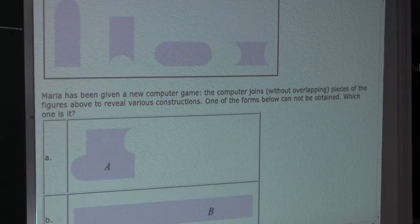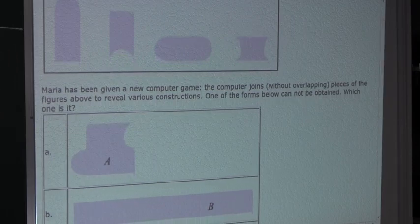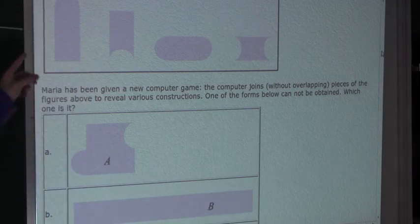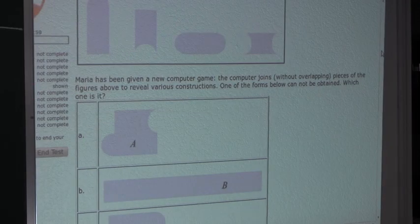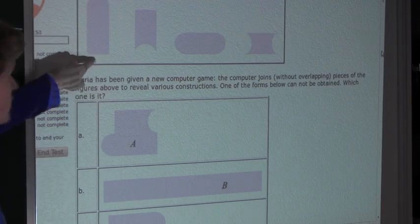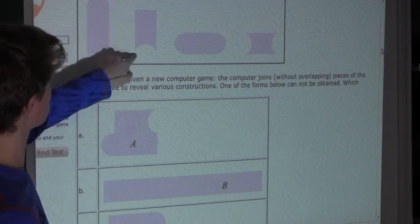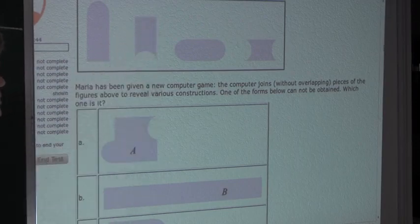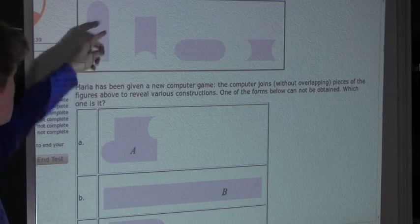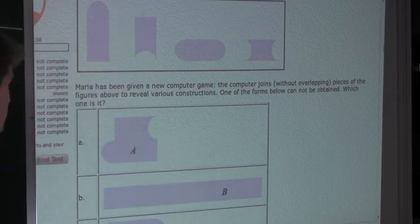Now let's look at option B. Option B is just a long rectangle. We know that the two ends of a rectangle, of course, have straight lines — here and here. Now looking at our four shapes, only two out of these four shapes even have a straight line end. That is this shape right here because of this straight line end, and this shape right here because of that straight line end. Therefore, we know that this shape must be at one of the two ends and this shape must be at one of the ends.